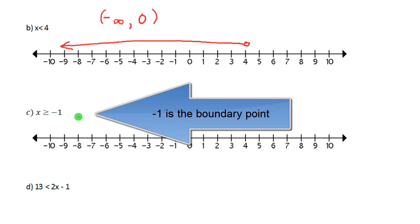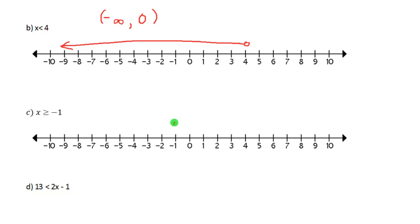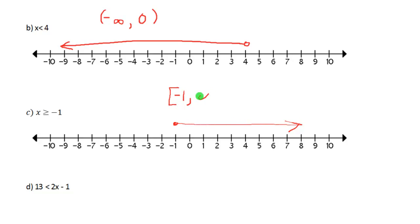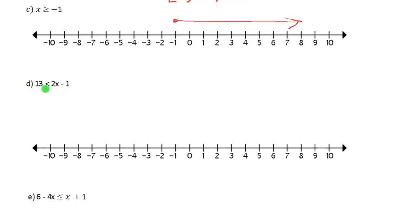In this next problem we have x is greater than or equal to negative one, so negative one is the boundary point. Because we have an equal sign this time, our boundary point is going to be a closed dot. To graph all the numbers that are bigger than negative one, we draw an arrow to the right. In interval notation, negative one is our smallest number but we have to include it, so we use a bracket instead of parentheses. We use infinity because we don't have a highest number, and infinity always gets parentheses.